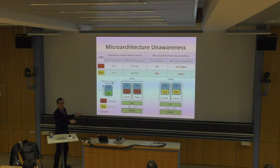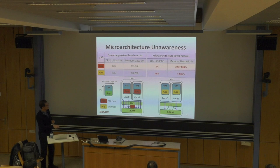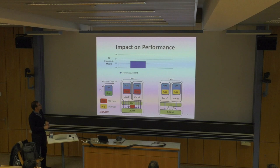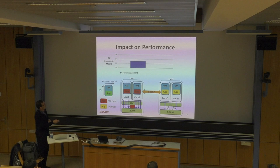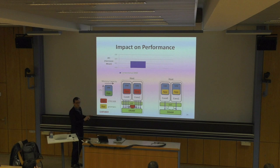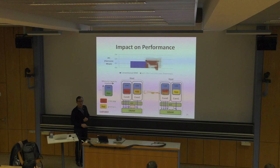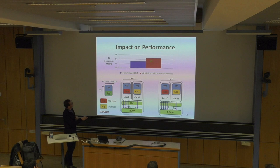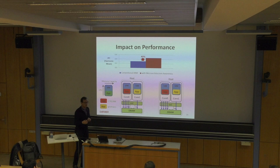Virtual machines within a host compete for shared cache capacity and shared memory bandwidth, but OS-level metrics cannot capture that microarchitectural interference. For example, with two virtual machines running stream and growmap with similar CPU utilizations and memory capacities: if you map based only on OS metrics, you might put both memory-intensive applications together, causing them to contend heavily for memory bandwidth. This is actually a pretty bad mapping.